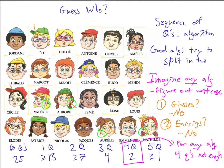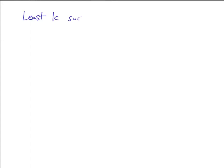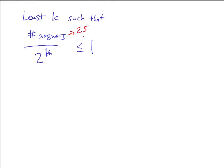So we just proved that any algorithm for the Guess Who problem with 25 faces needs at least five questions in the worst case. That's not to say that five questions is possible — maybe there's not that perfect set of five questions — but at least five questions would be necessary. Let's break down how we came up with that. It's really about powers of two. What we're looking for is the least k such that the number of possible answers over 2 to the k is less than or equal to 1. In the specific example, the number of answers was 25 — there were 25 faces. Also, the reason it's 2 is because we're restricted to yes or no questions.